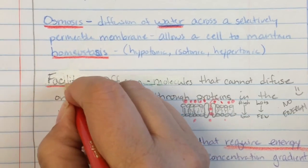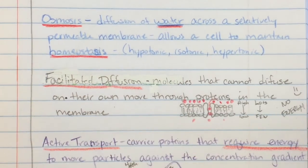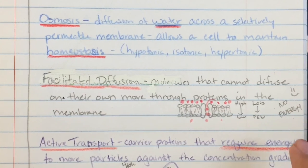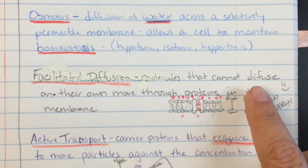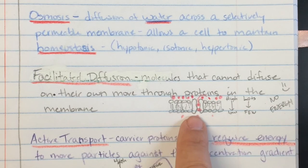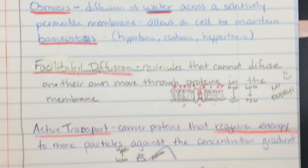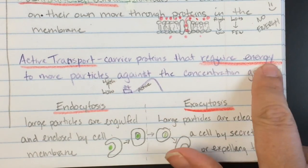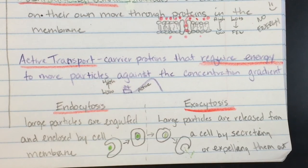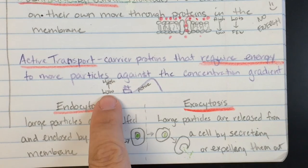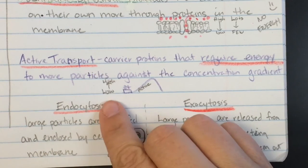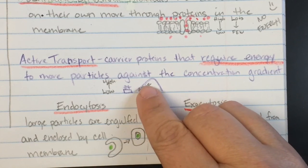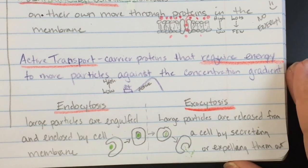And then we have, and it looks sloppy forgot to underline, facilitated diffusion. Molecules that cannot diffuse on their own move through proteins in the membrane. We're still going from high to low from lots to few and it still requires no energy, just needs a little help from a protein. Then we have active transport, carrier proteins that require energy to move particles against the concentration gradient. In this case we're going from low to high like when you go up a roller coaster hill. It takes some energy, it has to have active energy put in there.